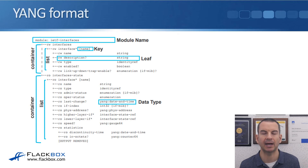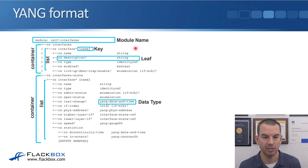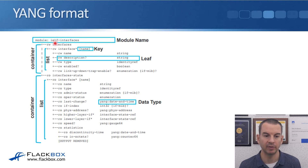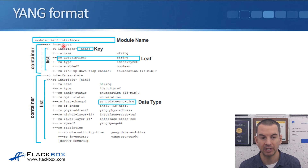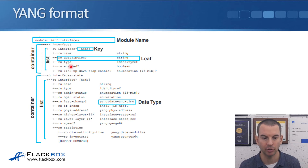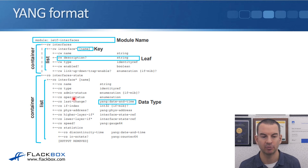Looking at the YANG format, at the top we've got the module name. This is a standard IETF module which describes the network device's interfaces. Then we've got a couple of containers: the first container describing the interfaces includes information like the name, description, type, and whether it's enabled or not. Then we've got another container for the state of the interface, which includes information like the name, type, admin and operational status, etc. That is how the YANG format is laid out.